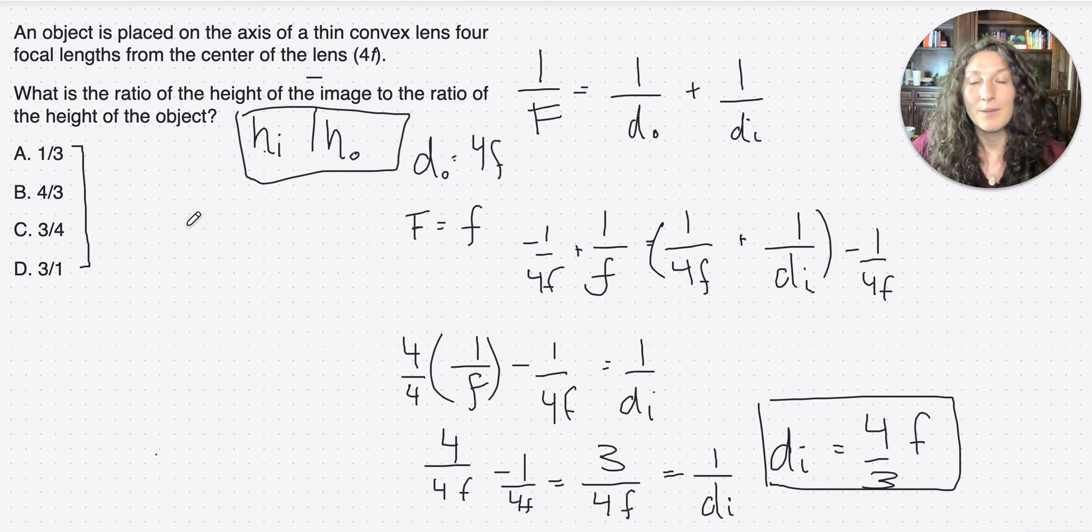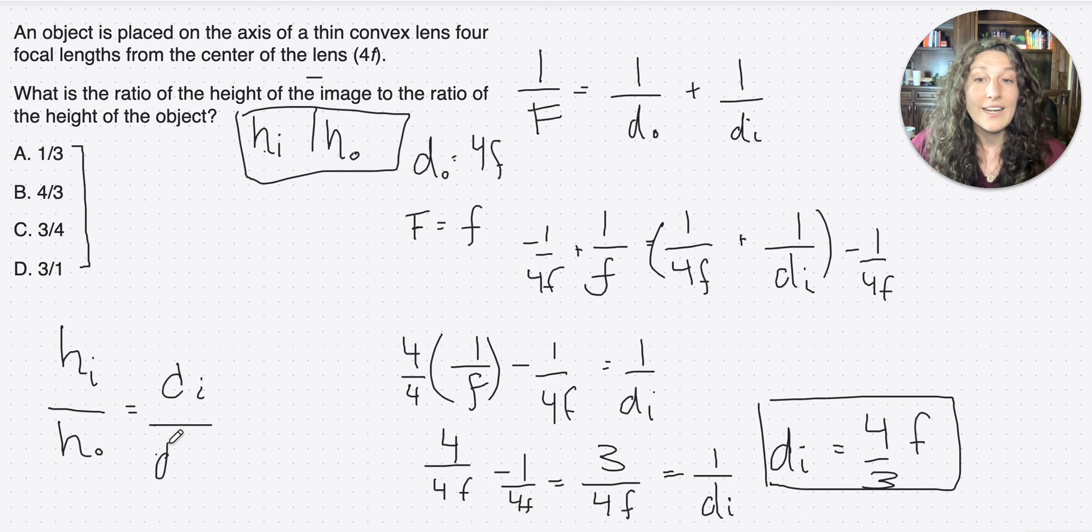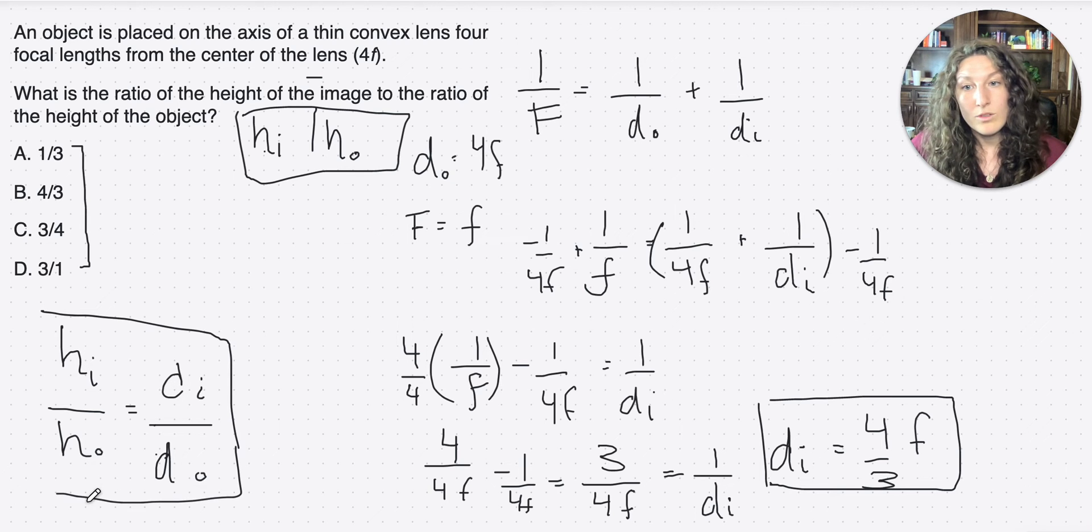Now again, you're telling me, Amanda, we don't have heights, so here's a cool rule about thin lens equations, is that the ratio of the height of the image to the height of the object is equal to the ratio of the distances. It's one of the principles of how thin lenses create images, all right? So you can use this as a rule on the MCAT, this ratio relationship.